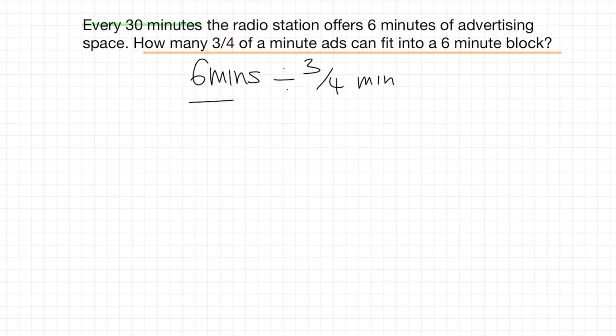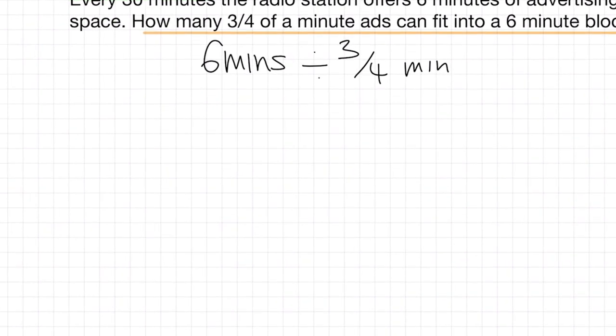So for example, we've got six minutes here, but the question actually talks about three quarters of a minute. So what we can do when we're dealing with fractions is to take this whole number, the six minutes, and just simply place that over one.